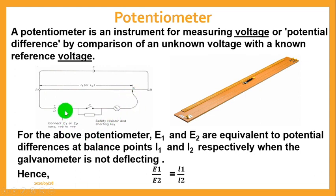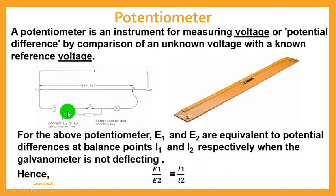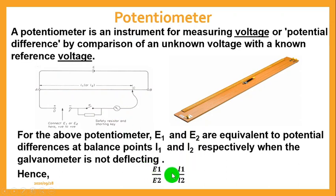When there is no deflection on the galvanometer, the length at that point is taken as L1. Since the value of E1 is known and L1 is now known, we then replace that cell with another cell whose potential difference is unknown — the one we want to determine. We vary the length again and find L2, the point where there is no deflection on the galvanometer again.